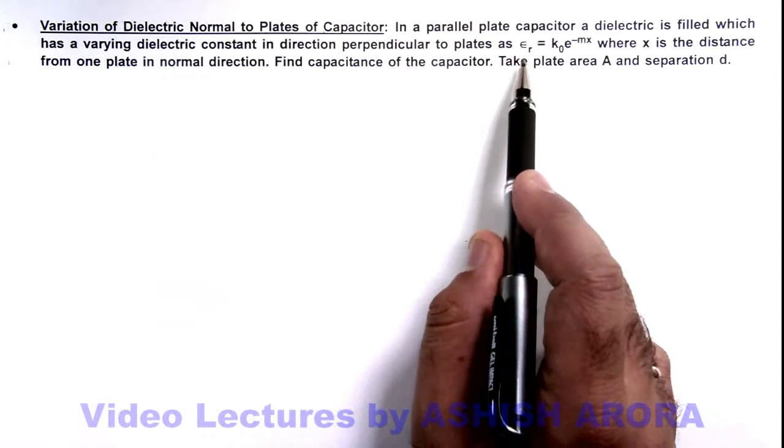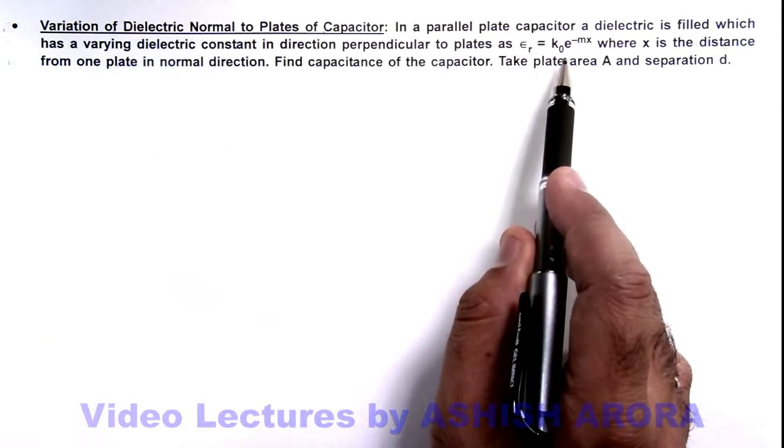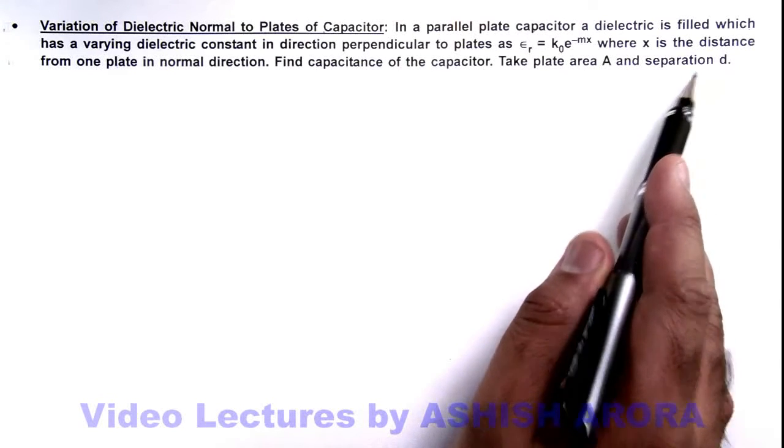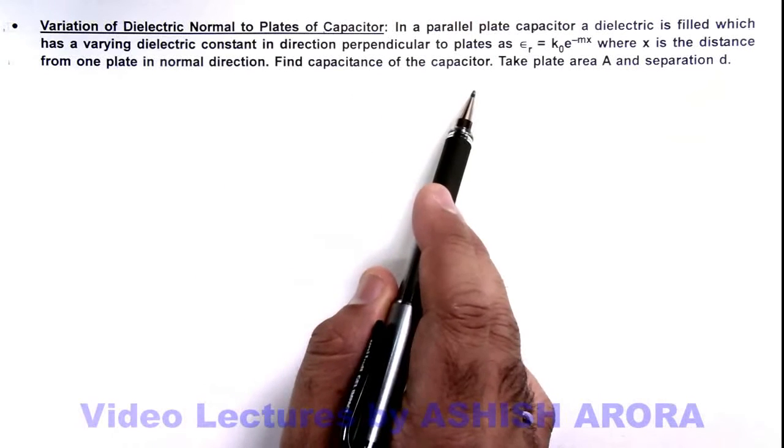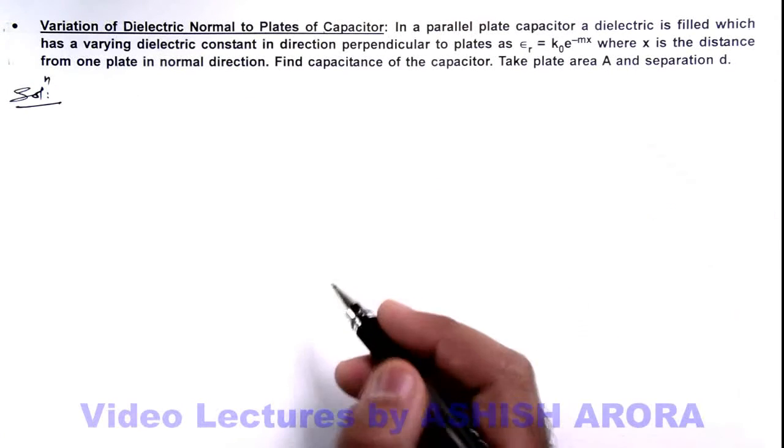The value varies as epsilon_r equals k_0 e to the power minus mx, where x is the distance from one plate in normal direction, and we are required to find the capacitance of the capacitor. Here we can take the plate area as A and separation d.